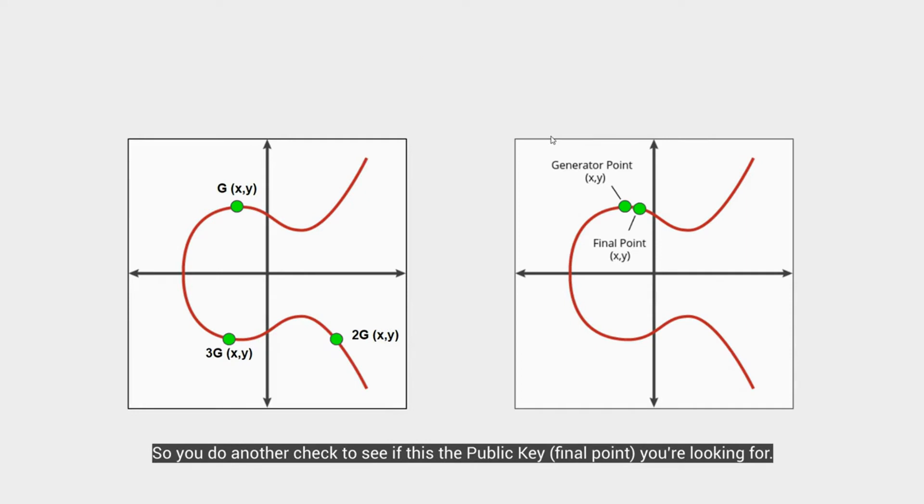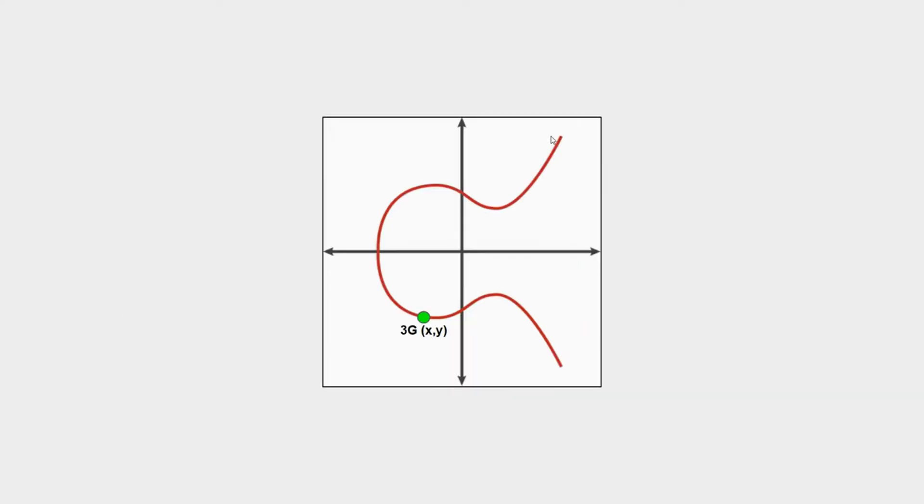So just like previous, we compare it. Is 3g our final point? Is it our public key? Clearly no. So what do we do now? Check to see if 4 is the private key.